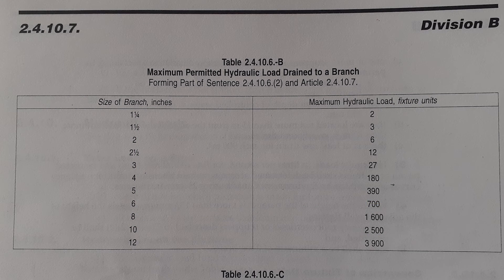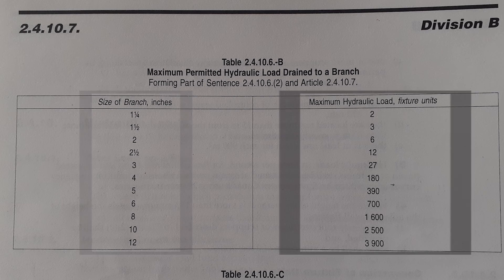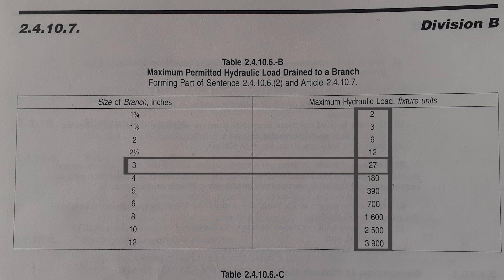Let's have a look at how to use these. The branch table is super easy to use. The left-hand column is the size of branch in inches and the right-hand column is the corresponding fixture units you can drain down those pipes. For example, if I have 25 fixture units draining through a branch, I look at the right-hand column. I have a choice of 12 or 27 fixture units. Since 12 is not big enough, I go to 27, and the corresponding size is 3 inch.